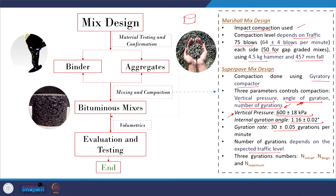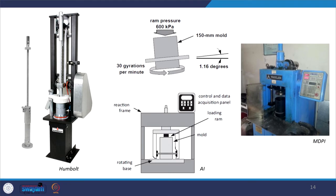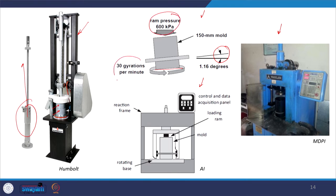In the Superpave mix design method, three different gyration levels are used as standards: N-initial, N-design, and N-maximum. These images show the Marshall compactor with its hammer and mold with collar, and the Superpave gyratory compactor illustrating the internal angle, vertical pressure, and rate of gyration — giving us a visual idea of both compaction methods.